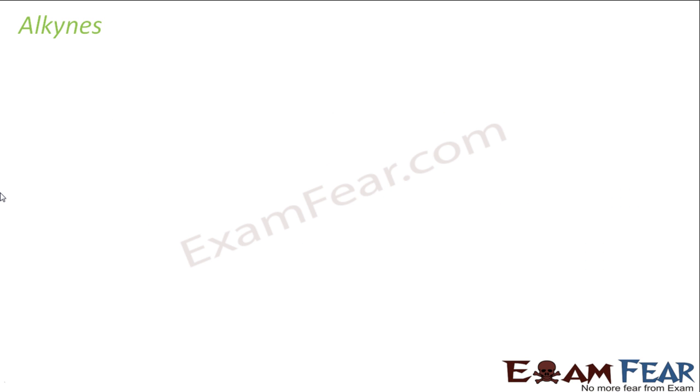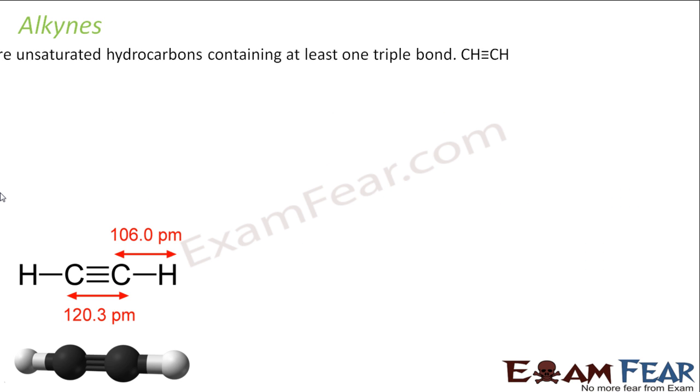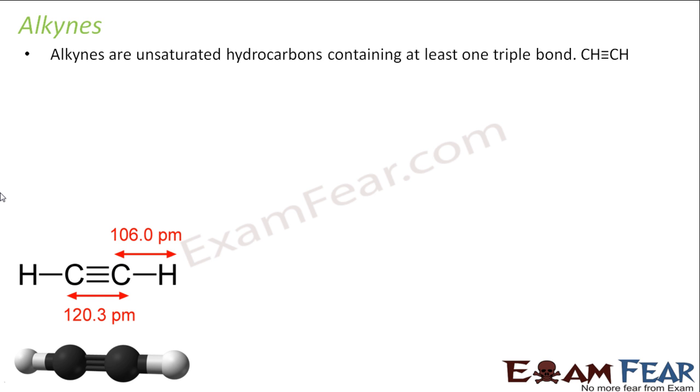Now we will study alkynes. Alkynes are unsaturated hydrocarbons and they have at least one triple bond — minimum one triple bond.